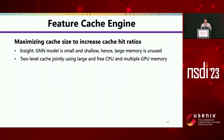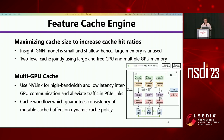Another way to increase the cache hit ratio is to maximize cache size. Since GNN models are small and shallow, there is large free memory on both CPU and GPU. Hence, BGL adopts a two-level cache, jointly using the large free CPU memory and multiple GPU memory. The most important part of the feature cache engine is the multi-GPU cache. Since feature retrieving has the largest communication traffic, we leverage NVLink, which has high bandwidth and low latency inter-GPU connections, to alleviate traffic on PCIe links. We also design a cache workflow to guarantee consistency of mutable cache buffers under the dynamic cache policy.